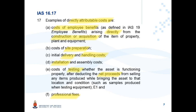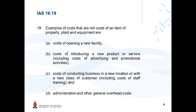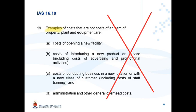Professional fees — such as lawyer fees or fees for any professional person involved in getting the asset into the condition necessary for its intended use — are also included. Paragraph 19 gives examples of costs that are NOT included in the cost of the PPE item: costs of opening a new facility, introducing a new product or service, conducting business in a new location, and administration and general overhead costs. These costs were not necessary to get the PPE item in the position ready for its intended use, so they will not be capitalized.